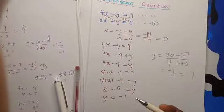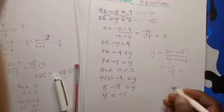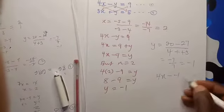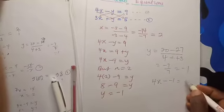That is, 4x minus y, which is minus 1, equals 9.